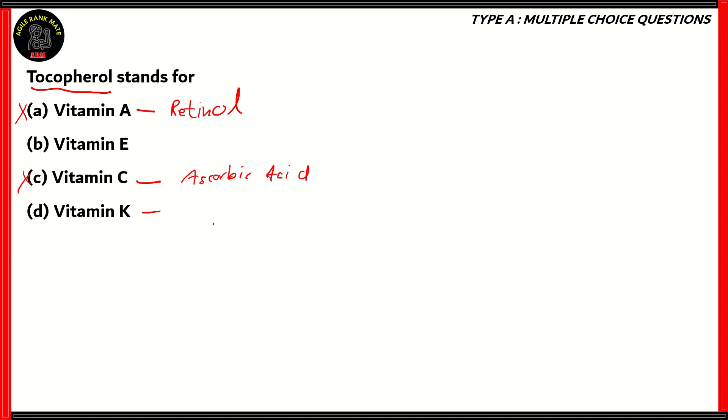What about option D, vitamin K? Vitamin K is fat-soluble and its chemical name is phyloquinone. Therefore, option D is also incorrect. The correct option is option B, vitamin E. Vitamin E's chemical name is tocopherol. Now remember, it is important to memorize the chemical names as well for exams so that you can get an edge and use the elimination method to find the correct option.